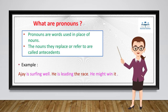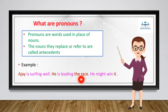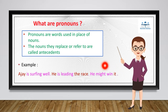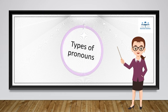For example: 'Ajay is surfing well. He is leading the race. He might win it.' In the first sentence, 'Ajay' is a noun and the subject. In the second sentence, 'he' replaces 'Ajay', so 'he' is a pronoun and 'Ajay' is the antecedent. In 'he might win it', 'it' refers to 'the race', so 'race' is the antecedent and 'it' is the pronoun.